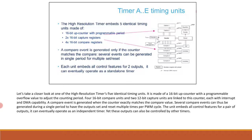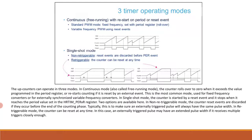The up counter can operate in three modes. In continuous mode, also called free running mode, the counter rolls over to zero when it exceeds the value programmed in the period register, or restarts counting if reset by an external event. This is the most common mode used for fixed frequency converters or externally synchronized variable frequency converters.